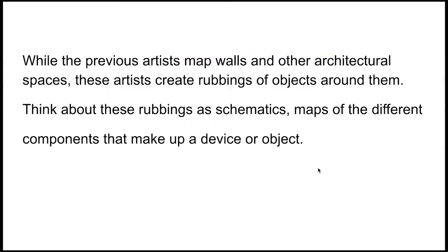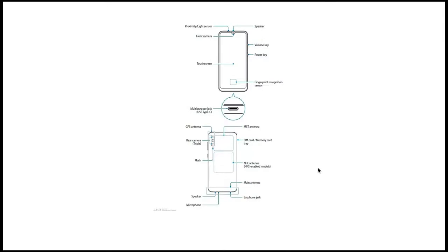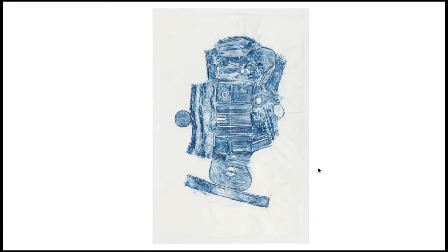While the previous artists map walls and other architectural spaces, these artists create rubbings of objects around them. Think about these rubbings as schematics — maps of the different components that make up a device or object. This is an example of an iPhone schematic. It helps us see the various parts and where they are located. Jennifer Bornstein. This is a wax crayon rubbing of a 16mm camera. When Bornstein creates a rubbing of her camera, she makes a schematic, a map of all its various parts, showing where each part is located.